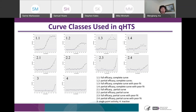After screening, we get a large amount of data including actives, inactives, and many dose-titration curves. To quickly evaluate screening data, our informatics scientists developed a curve class system. Curve class 1.1 is the best, with full efficacy; 1.2 is also good but with partial efficacy; curve class 3 is a single-point activity curve; and curve class 4 is inactive. Compounds with curve class 1.1, 1.2, 2.1, or 2.2 are considered to have a higher likelihood of being confirmed in follow-up studies.